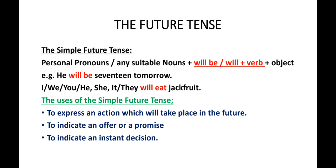He will be 17 tomorrow. I will eat jackfruit. Look at the verbs used in the two sentences. The first sentence takes 'will be' as the main verb, which is the simplest form of a future tense. 'Will be' is a helping verb, and here it works as a main verb. The second sentence uses 'will' plus the verb 'eat,' meaning the auxiliary verb 'will' plus any regular or irregular verb makes a sentence in the simple future tense.